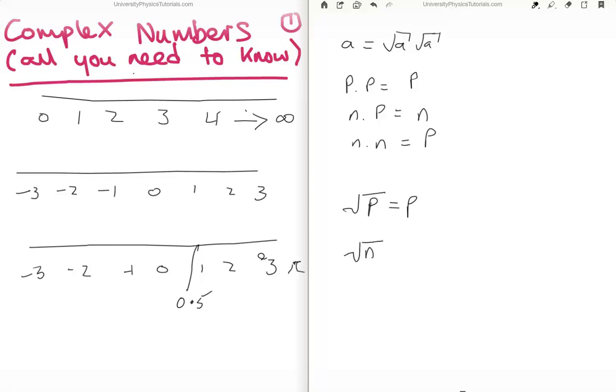But what if we look at the square root of a negative number? The square root of a negative number, well what can it not be? Well it can't be negative.